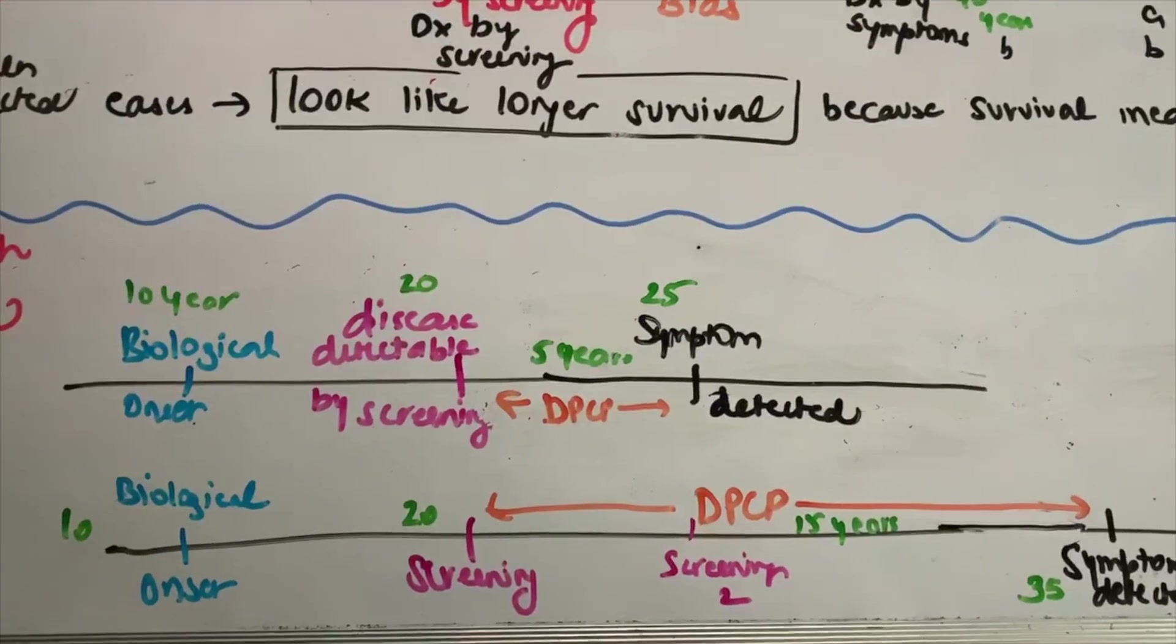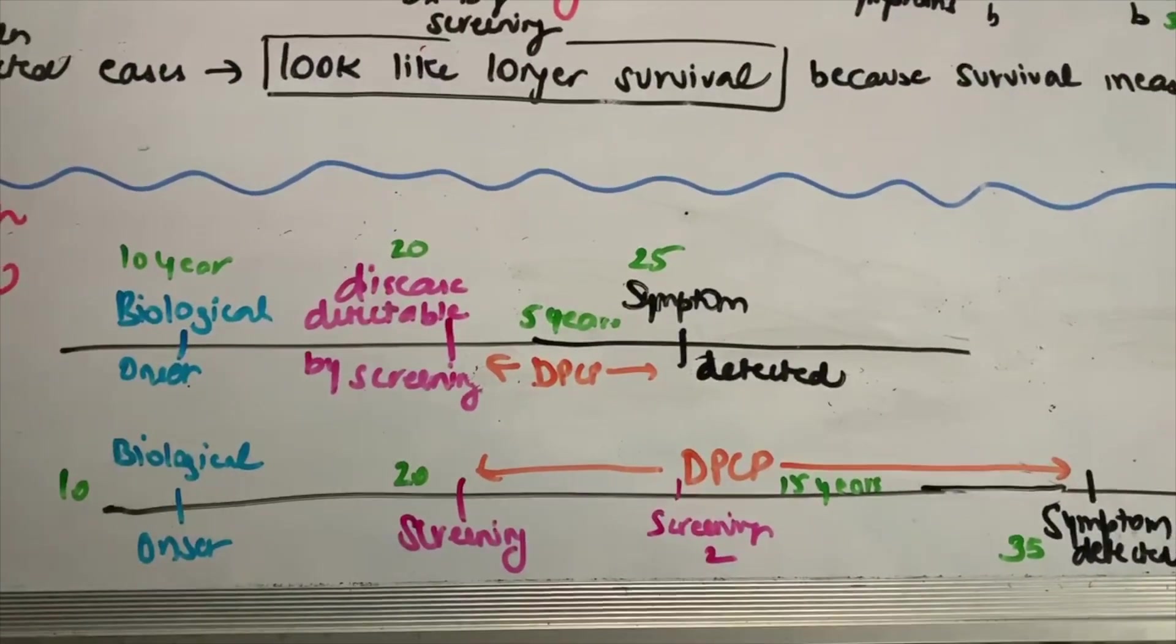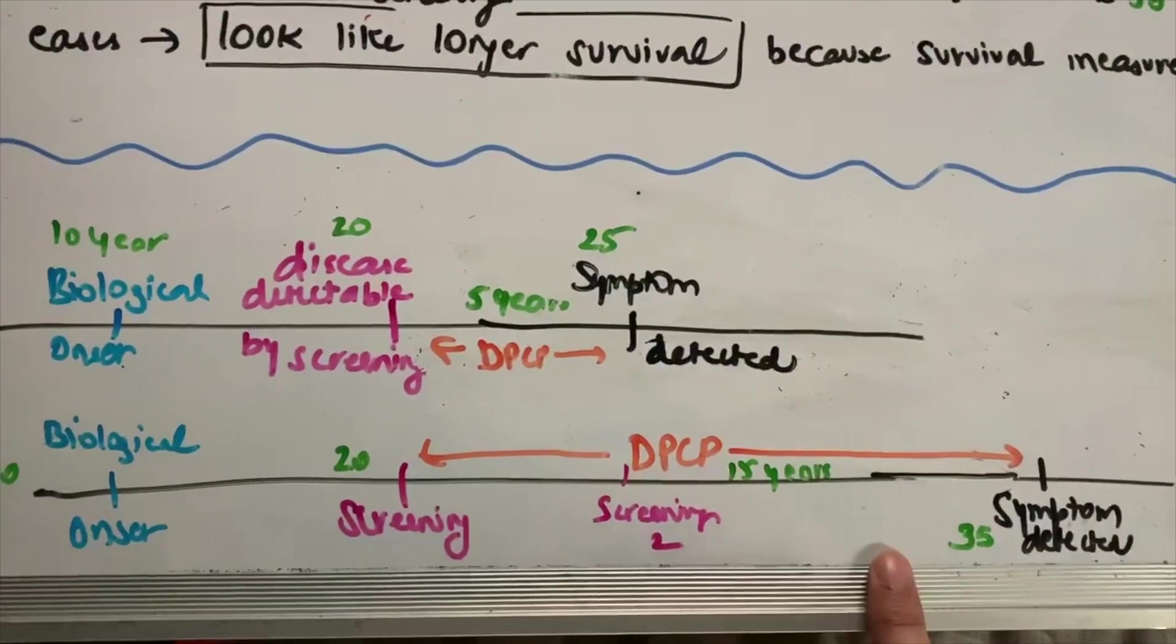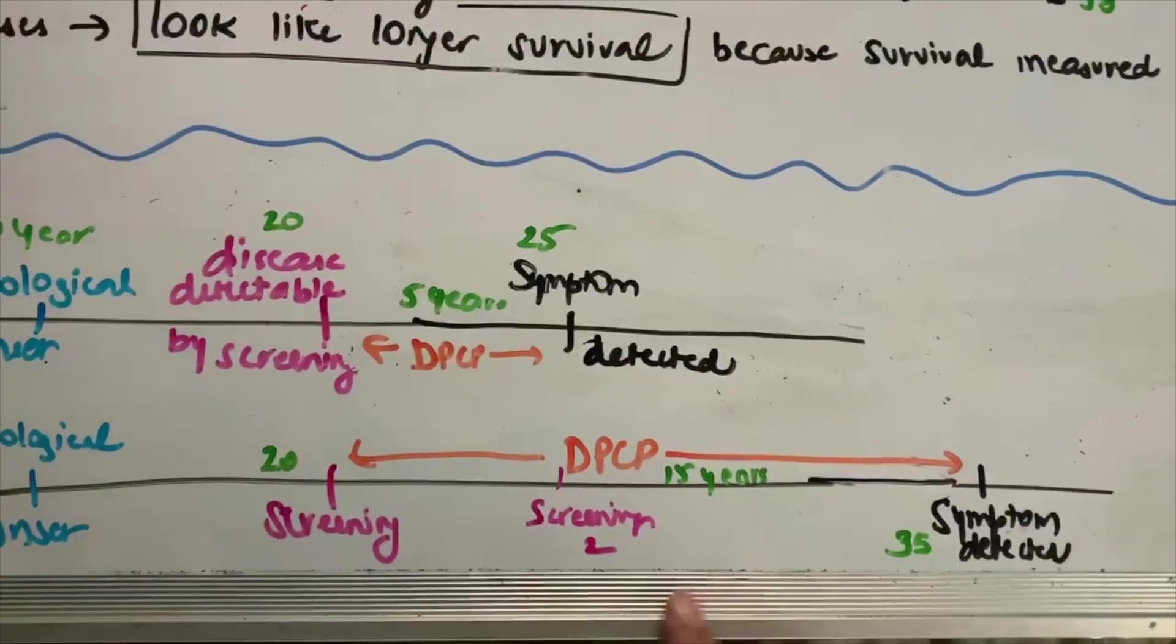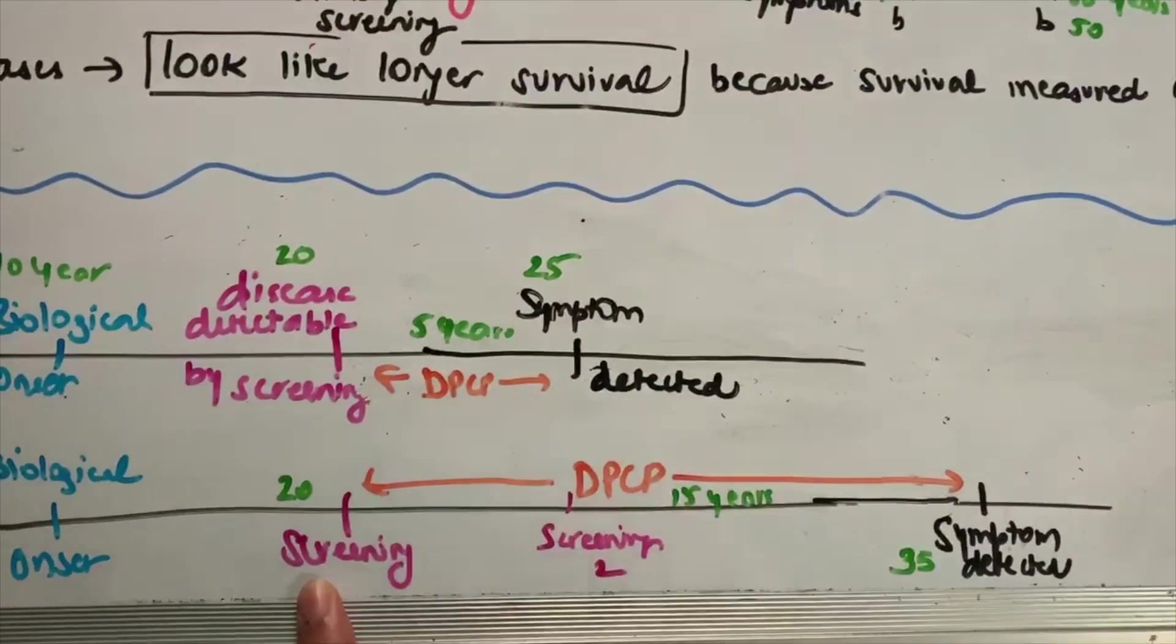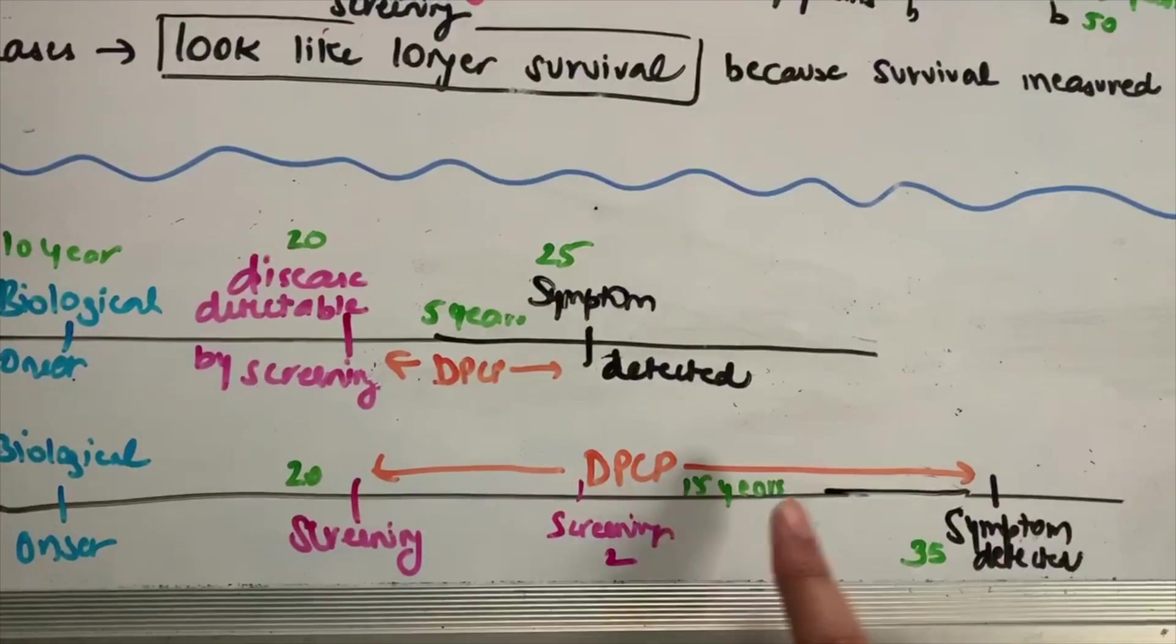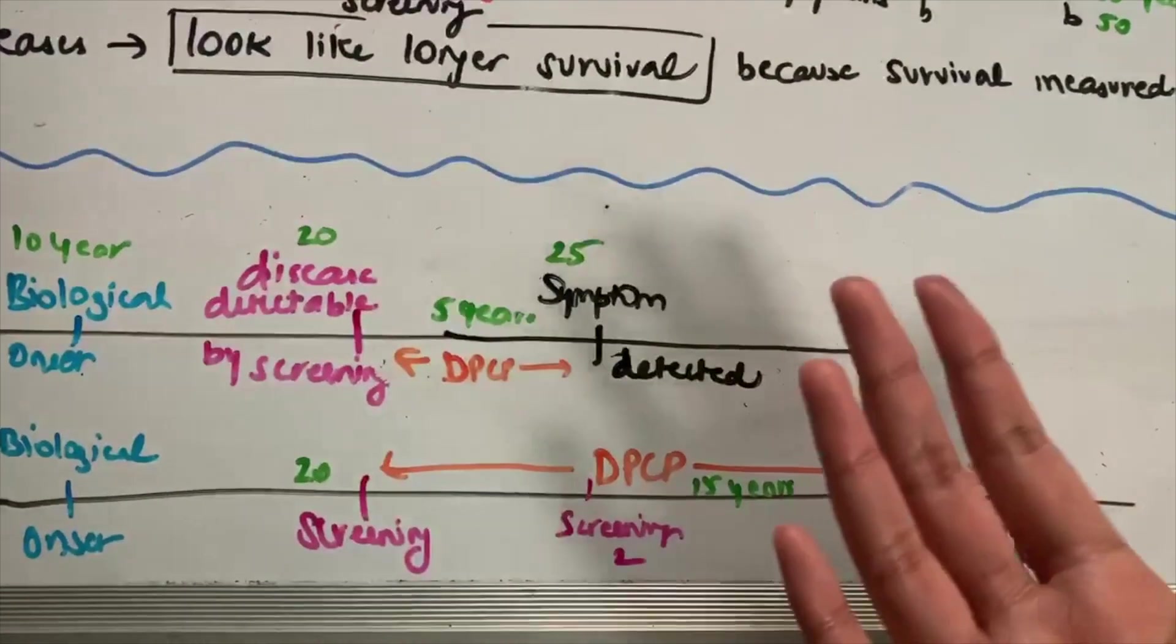So length time bias is more about the nature of the disease. So let me explain. You have two cases again here. So the second case, as you can see here, has a really benign, favorable form of lung cancer that is asymptomatic for so many years. So he gets screen-detectable at 20, but his first symptom only develops at 35. So he has a 15-year-long DPCP where he has a chance to get screened and he's still asymptomatic.